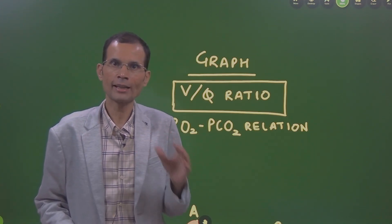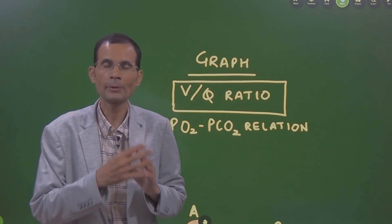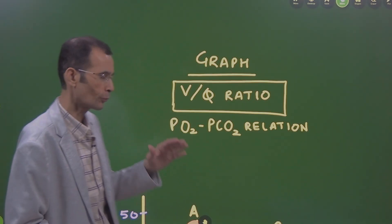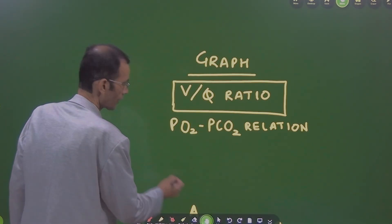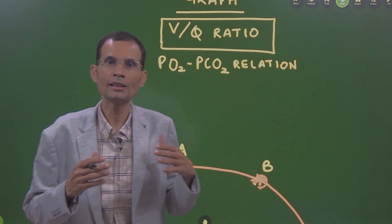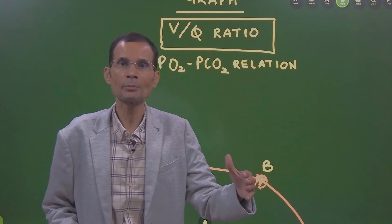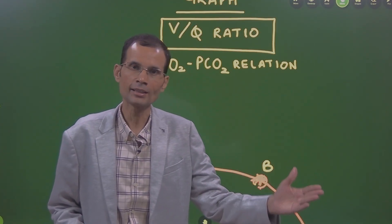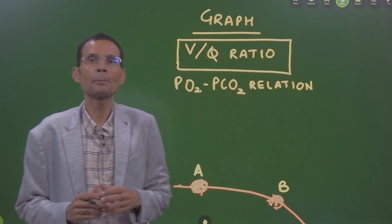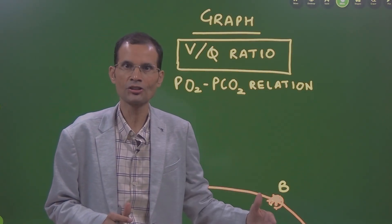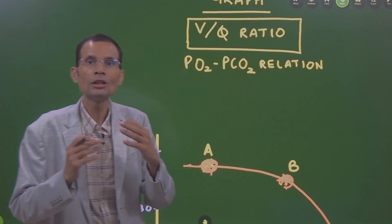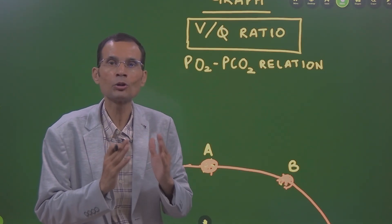As you all are aware, we discuss graphs regularly on our channel and there is a separate playlist where we discuss graphs from physiology and medicine. Today's video is on one such graph. This graph was asked in the recently concluded NEET PG exam and therefore it is very highly likely that it will be asked in the first MBBS prof exam and final exams. The graph is depicting the ventilation-perfusion relationship based on the PO2-PCO2 relation in the alveolar air.